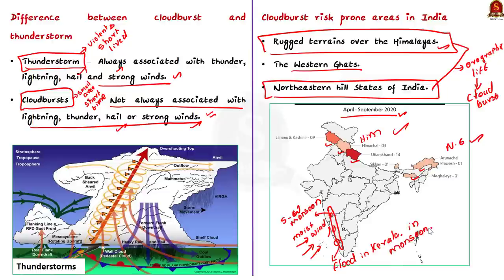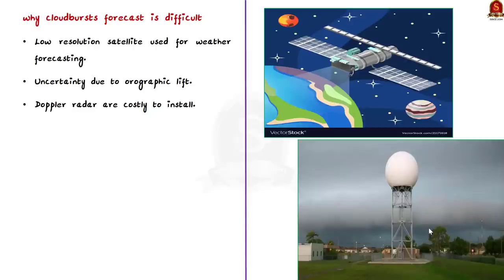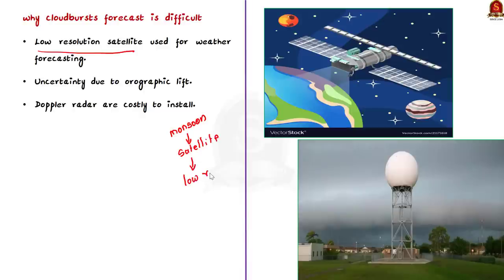Now let us see why cloudburst is difficult to forecast. First is low-resolution satellites. In India, weather events like monsoon are forecasted using satellite images, but these satellite images have low resolution. Cloudburst events are very local — occurring within an area of only 20 to 30 kilometers — so the low-resolution cameras used by weather agencies are not able to capture these events.